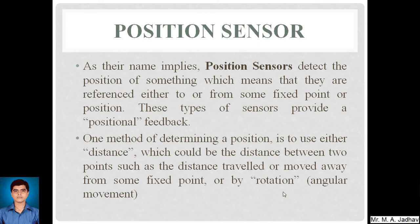One method of determining position is to use either distance — which could be the distance between two points, such as the distance travelled or moved away from some fixed point — or by rotational position, that is angular movement. So we have to consider either linear motion or rotational motion when deciding the position of the object.